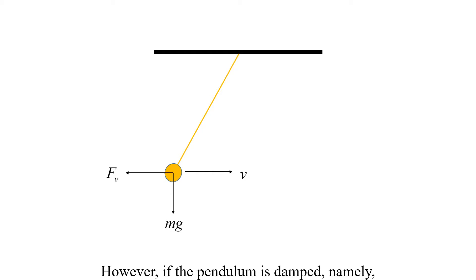However, if the pendulum is damped, namely, a force FV in the opposite direction of the velocity is added, the pendulum will finally stop at the lowest position.